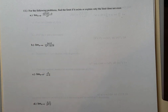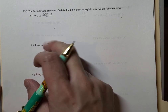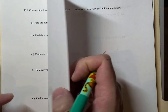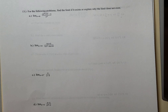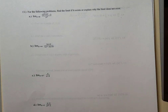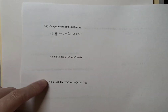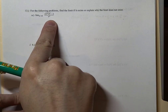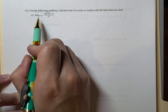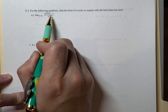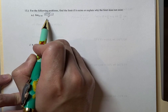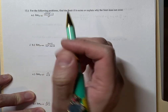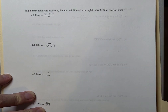We have this limit to find. We can try plugging in 0 first: we get the square root of 9, which is 3, minus 3, which is 0 on top; and 0 squared, which is 0 on the bottom. Zero over zero — that's indeterminate, we've got to do something about it. We can use the technique where we multiply by the conjugate.